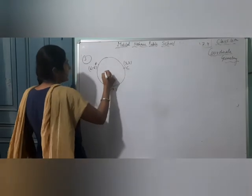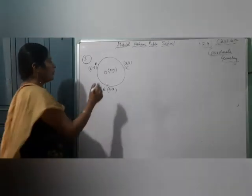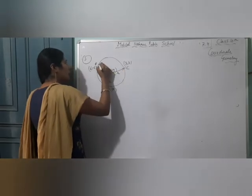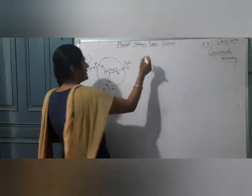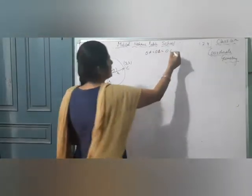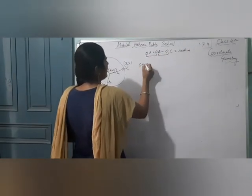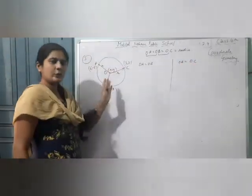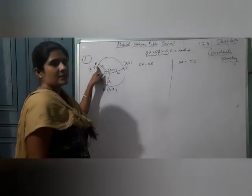If we join O to A, B, and C, each is a radius. Since all radii are equal: OA = OB = OC. From this we take two equations: OA = OB and OB = OC. Solving these two equations, we will find x and y. We calculate OA and OB using the distance formula.